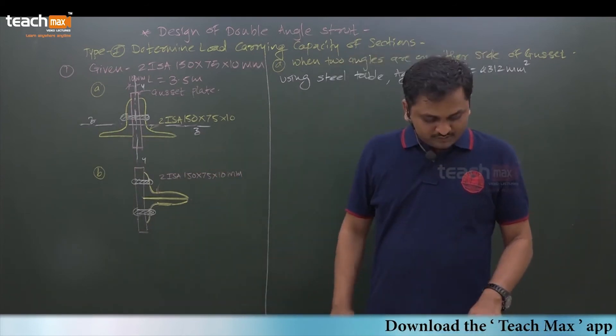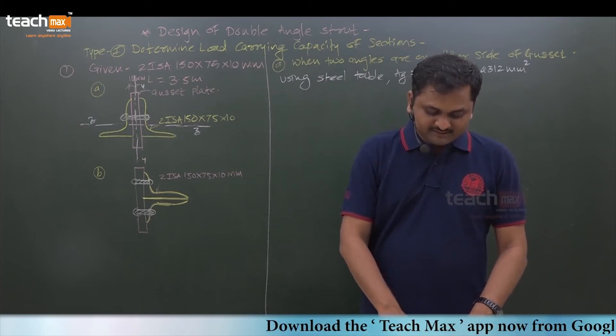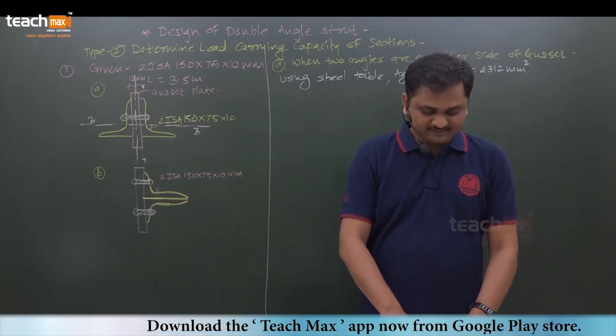So from double angle properties you can easily get the value, that is rzz. So you can pick that.